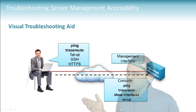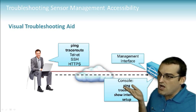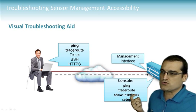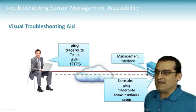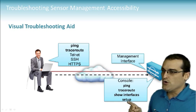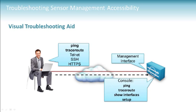On the intrusion prevention sensor itself, we're not without tools. From the console at the command line, we can issue Ping, we can issue Traceroute, we can do a show interfaces. And if we think things are really messed up with the bootstrapping of the sensor, we can initiate the setup script to guide us through properly configuring the device.